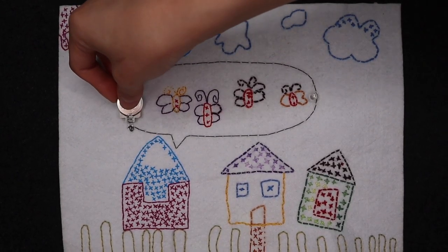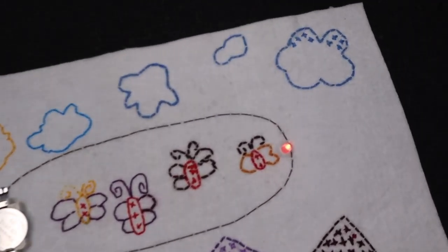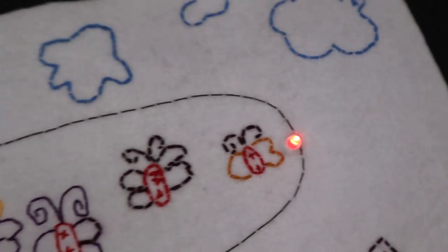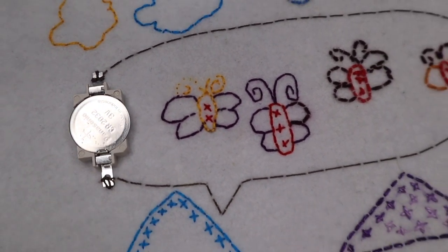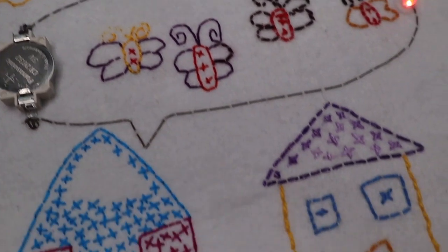My happy house. You will connect an LED to a battery with conductive thread to create a simple light circuit on your embroidered picture.